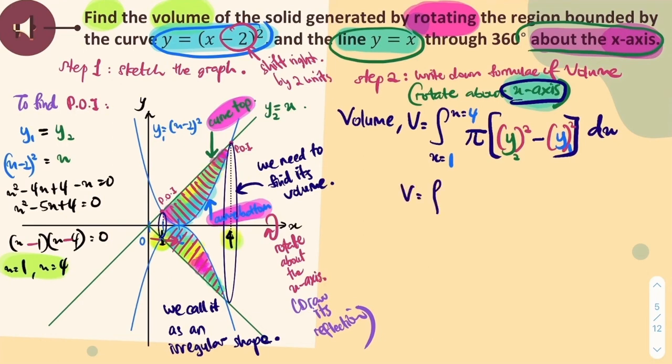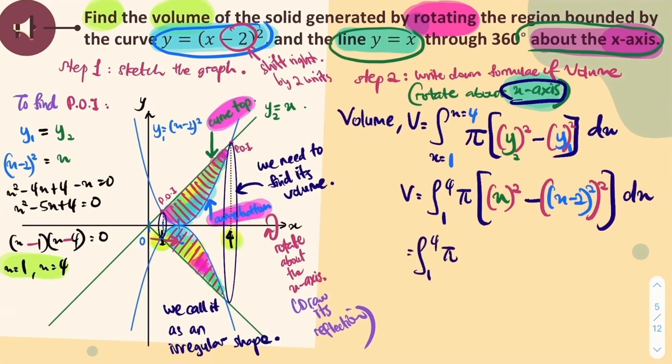This formula is to find our middle region. We have learned this in our tutorial class, the area of a region. It is just the same method. Top curve minus bottom curve to find the middle region. I leave it to you here for you to see the final answer. Thank you.